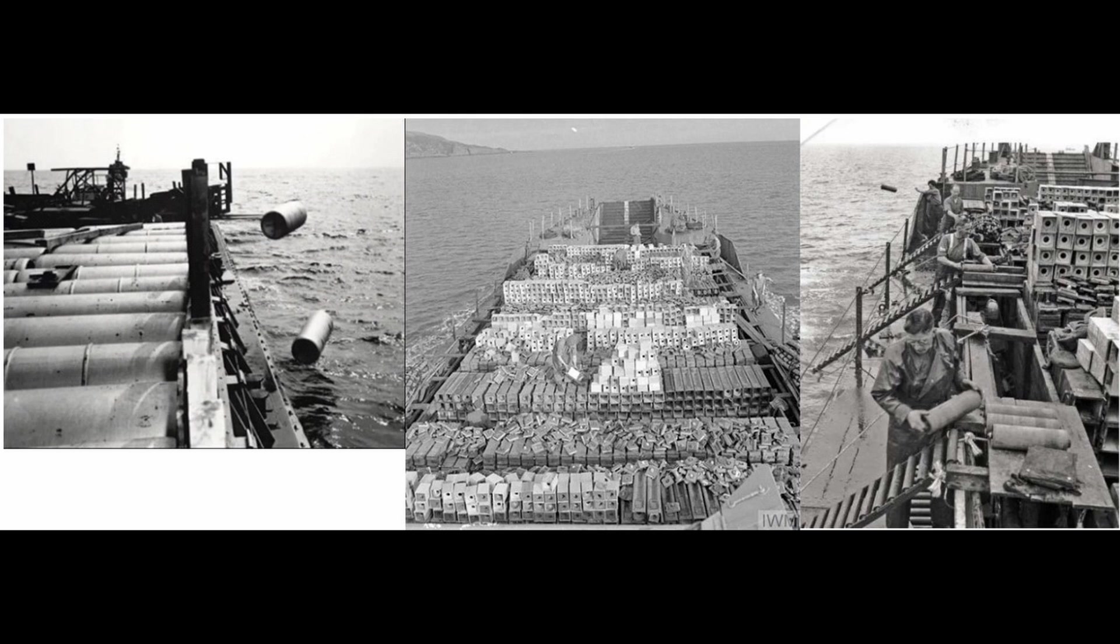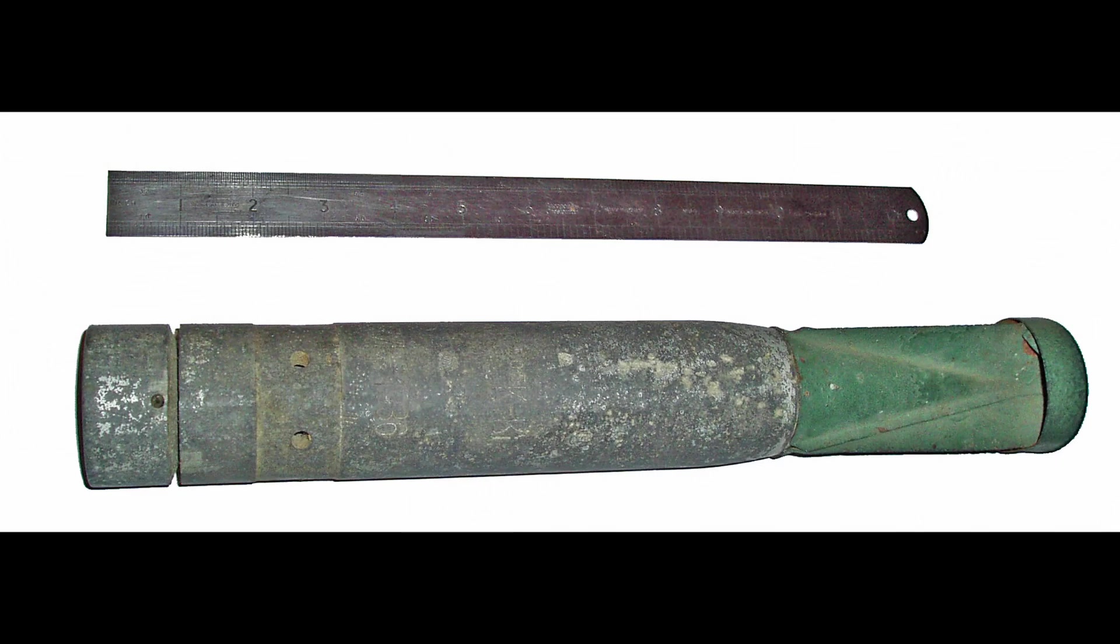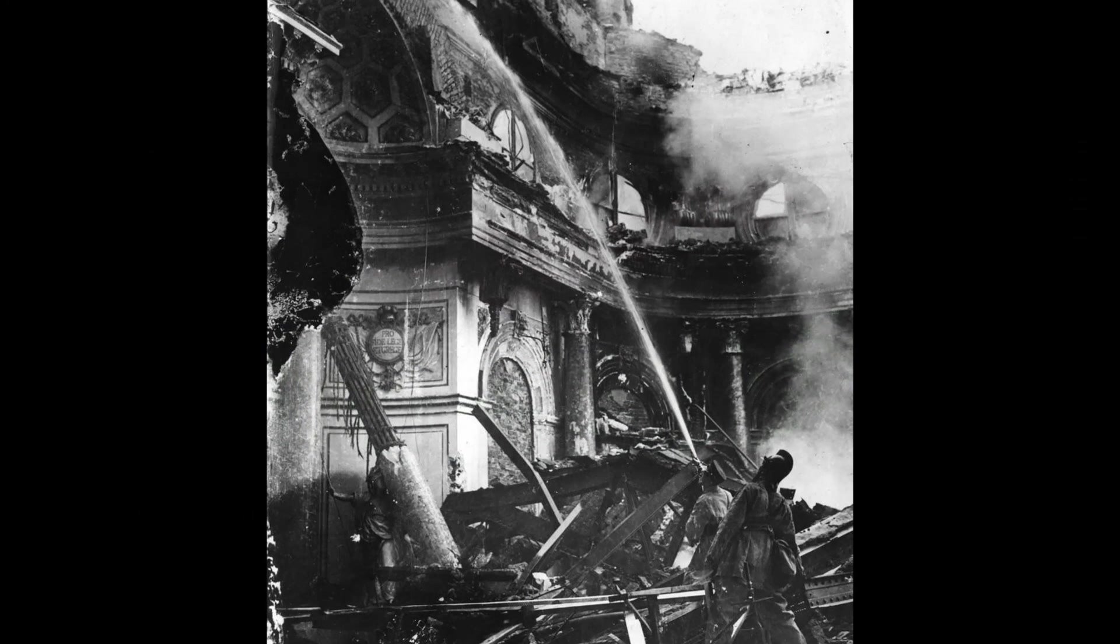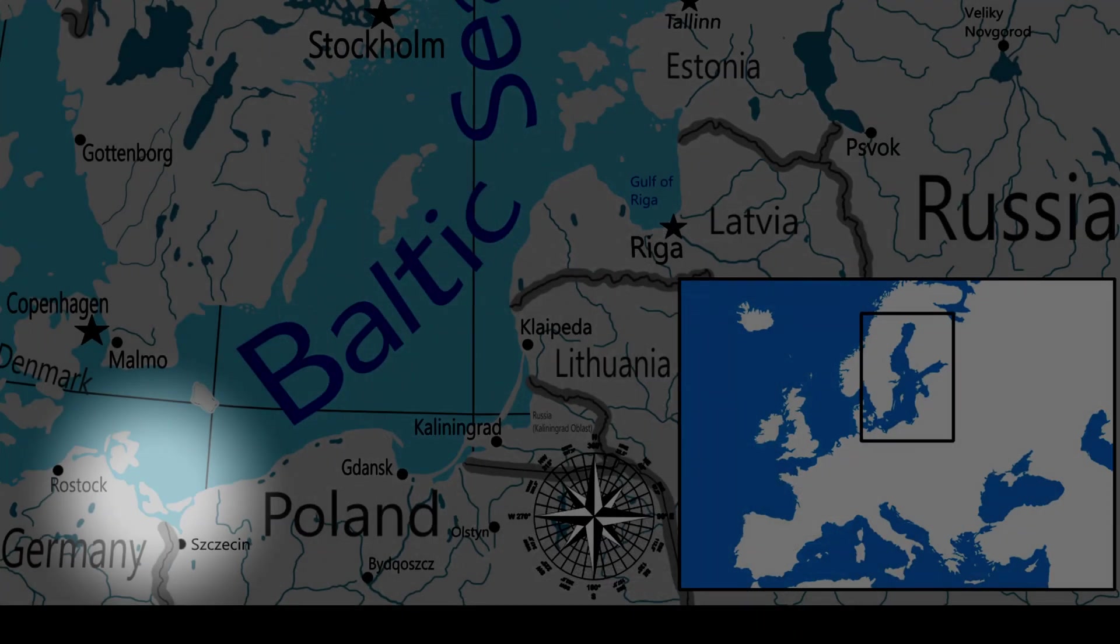In the aftermath of World War II, vast quantities of munitions including those containing white phosphorus were disposed of in the Baltic Sea. This practice was part of efforts to demilitarize and eliminate surplus weaponry. Now the second reason are incendiary bombs. During the war incendiary bombs containing white phosphorus were deployed extensively.